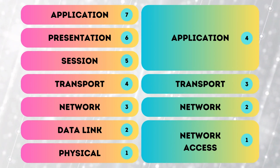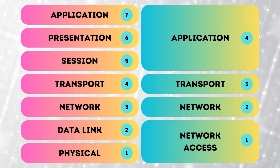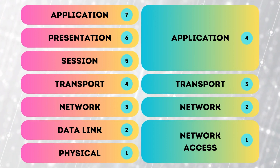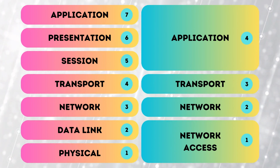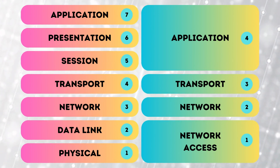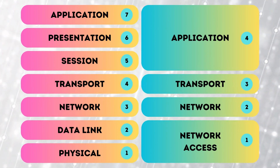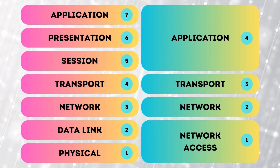Now let's look at the TCP/IP model, which is slightly different — it has only four layers: the Network Access Layer, the Internet Layer, the Transport Layer, and the Application Layer. If we put these side by side with the OSI model: the Application Layer in TCP/IP maps to Layers 7, 6, and 5 of OSI — Application, Presentation, and Session. The Transport Layer maps to Layer 4, the Internet Layer maps to Layer 3, and the Network Interface — or Network Access — Layer maps to Layers 2 and 1: Data Link and Physical.